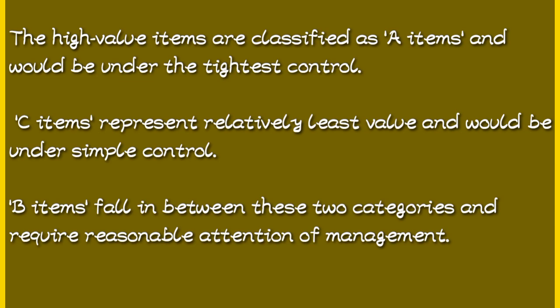So the ABC analysis: A is for the highest value items, B is for those items that are in the middle, and C items are the least important but still important. They are classified according to their value: A, B, and C.